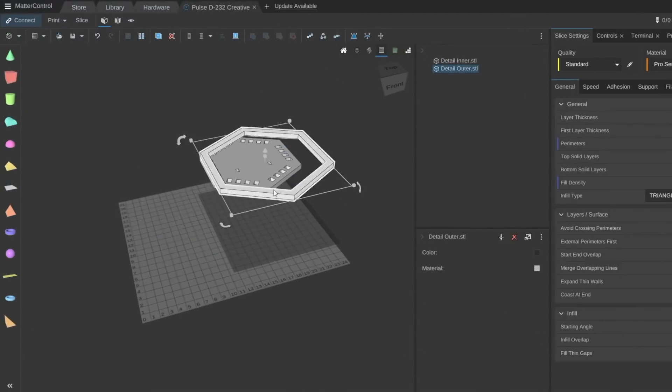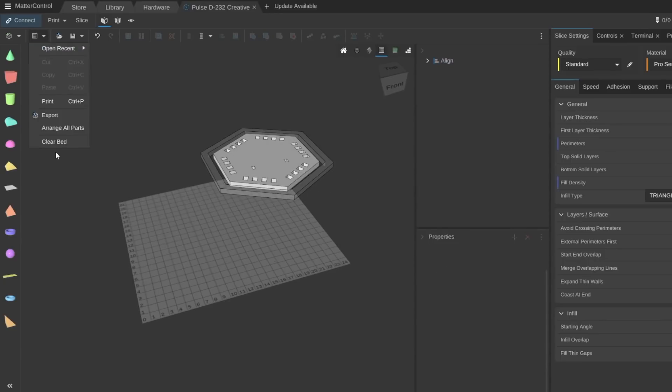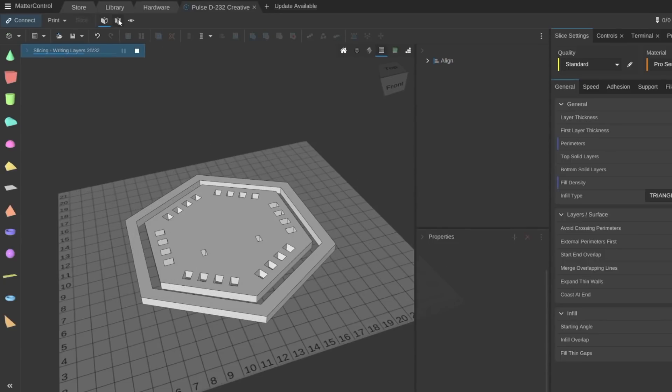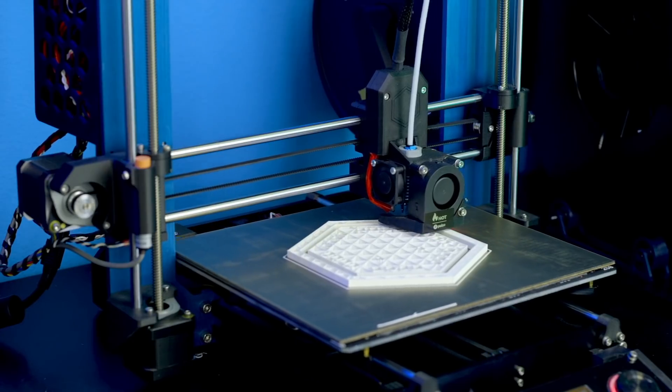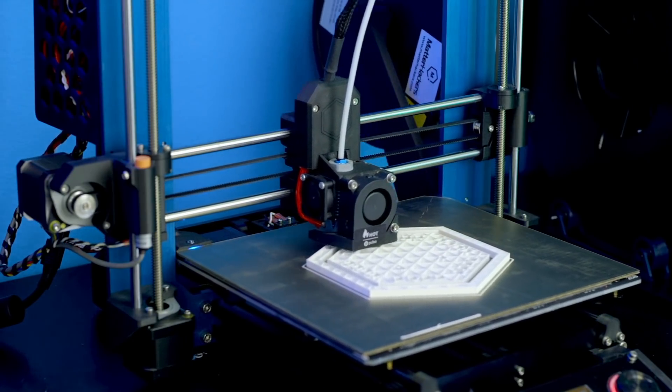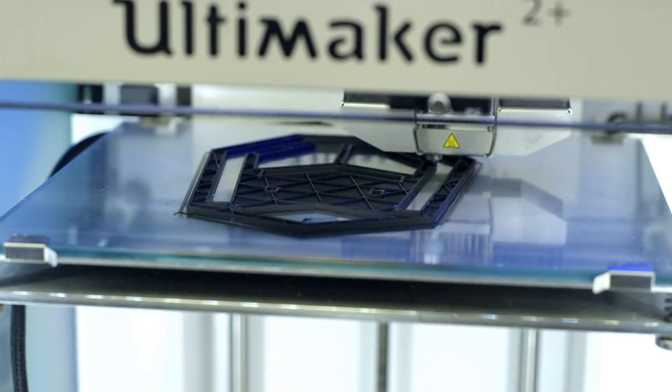Then from there, when I brought in the hexagon pieces, since they weren't touching and were separate bodies, I could align them along the origin to keep them all centered on each other, put them down, sliced it, double-checked the G-code, and then went ahead and started these on a Pulse and an Ultimaker just to let them go and get things printed a little bit quicker.